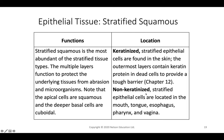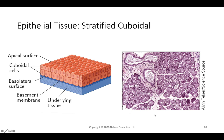Stratified squamous tissue can be keratinized or non-keratinized. Keratin is a protein found in hair, skin, and nails — a tough protective barrier layer. Keratinized cells are found in the skin. Non-keratinized stratified epithelial cells line the respiratory and digestive tracts as well as the vaginal opening.